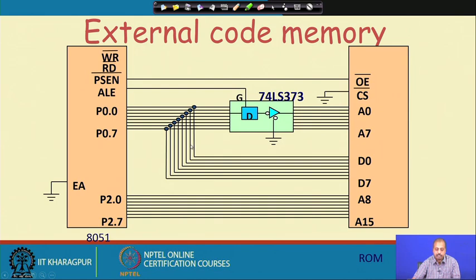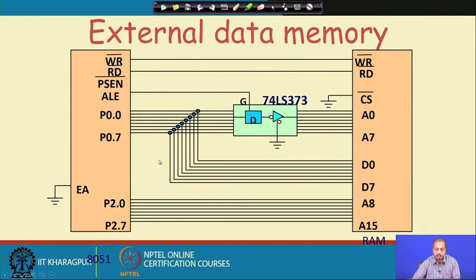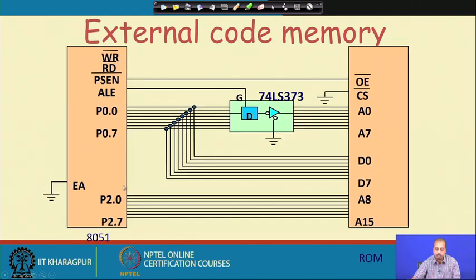In both cases external memory is accessed. We will see in more detail where the EA bar line makes a difference between external and internal access. Since we are doing external access here, EA bar pin should be grounded — and for external code memory access as well, since we are doing external memory access, EA bar should be grounded.